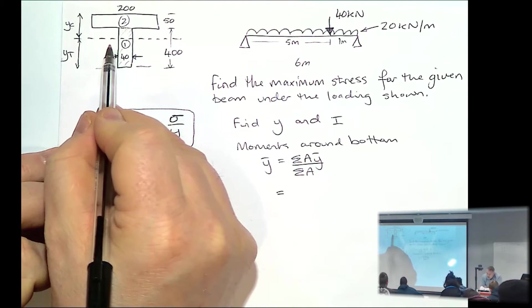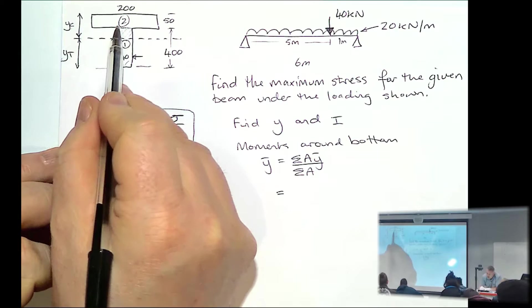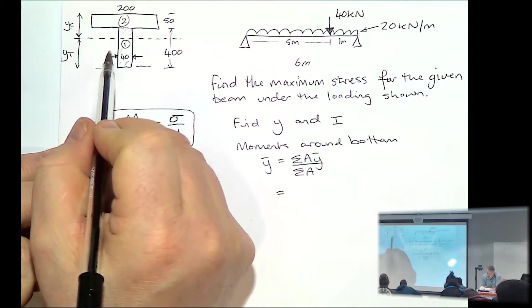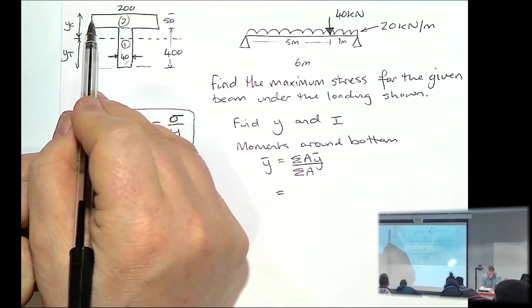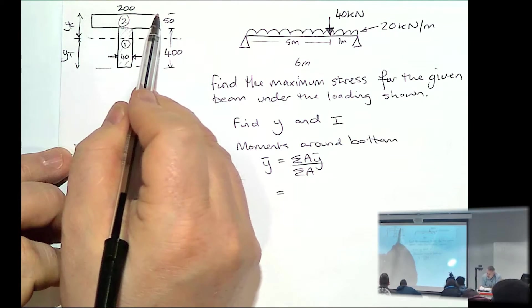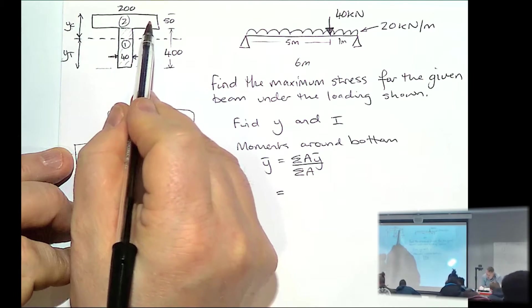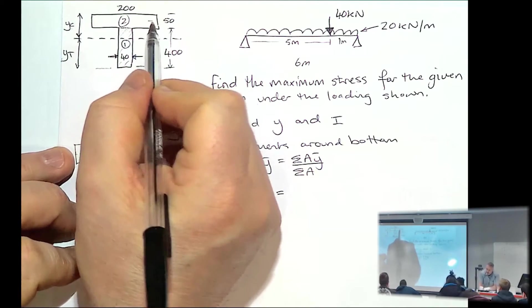So we'll have this distance, 200 times by the area of 400 by 40. And then we'll be adding the area, 200 by 50 times by the distance. It will be 425 to that point there.